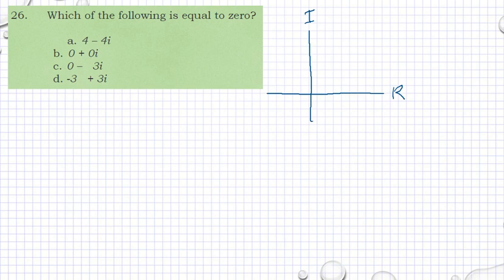So this one, 4 minus 4i, that means you have 1, 2, 3, 4, then you have 1, 2, 3, 4. There it is. That is your point. And you have your length there, or the vector there. So this is not equal to 0.